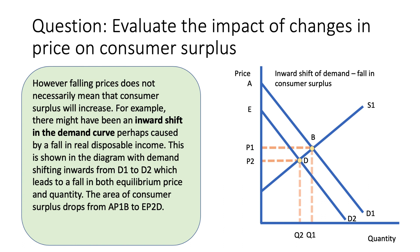An important evaluation point is that price falls do not necessarily mean that consumer surplus increases. There could be an inward shift in the demand curve — for example, a recession leading to a fall in real disposable income — causing the demand curve to shift from D1 to D2. This inward shift causes a fall in both equilibrium price P1 to P2 and quantity Q1 to Q2, and as a consequence consumer surplus falls from area A, P1, B to E, P2, D — quite a significant drop.